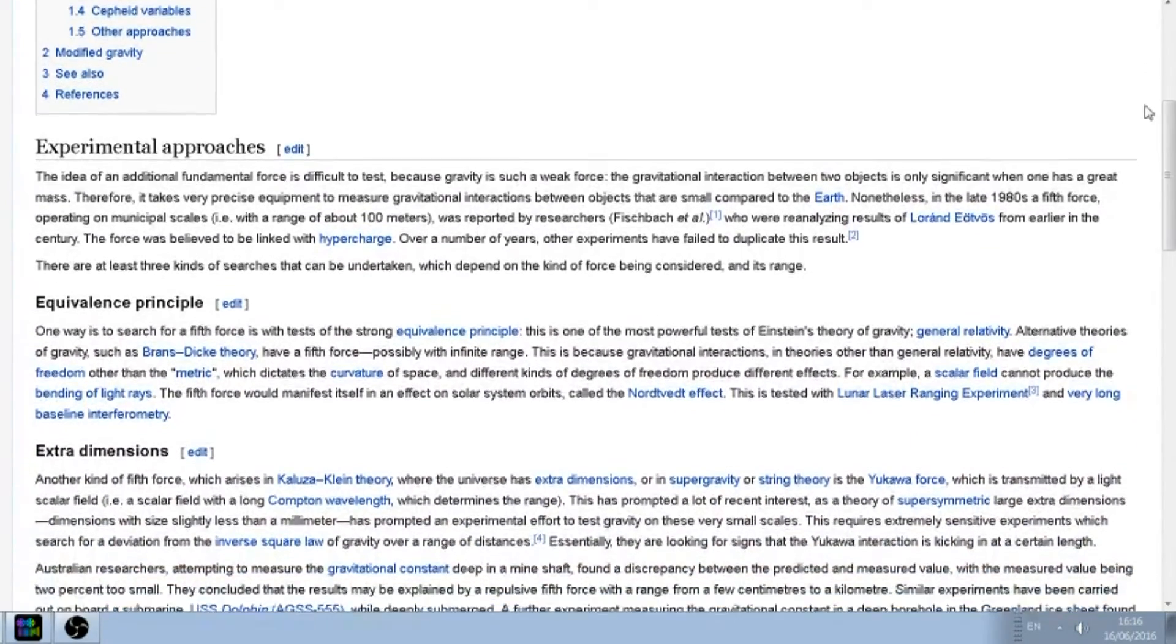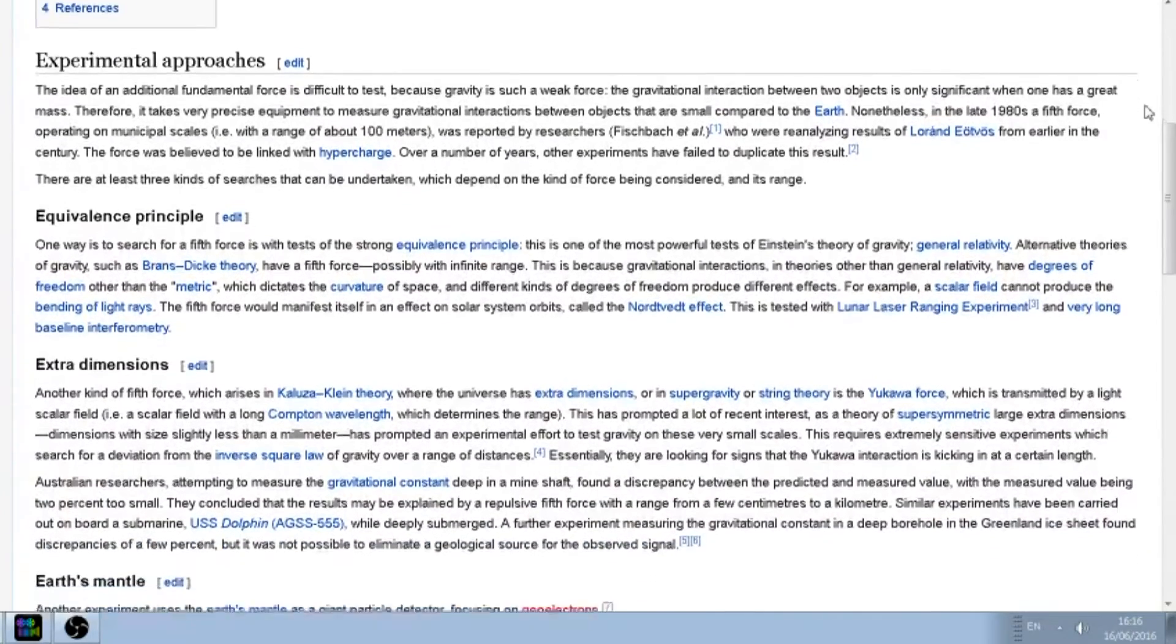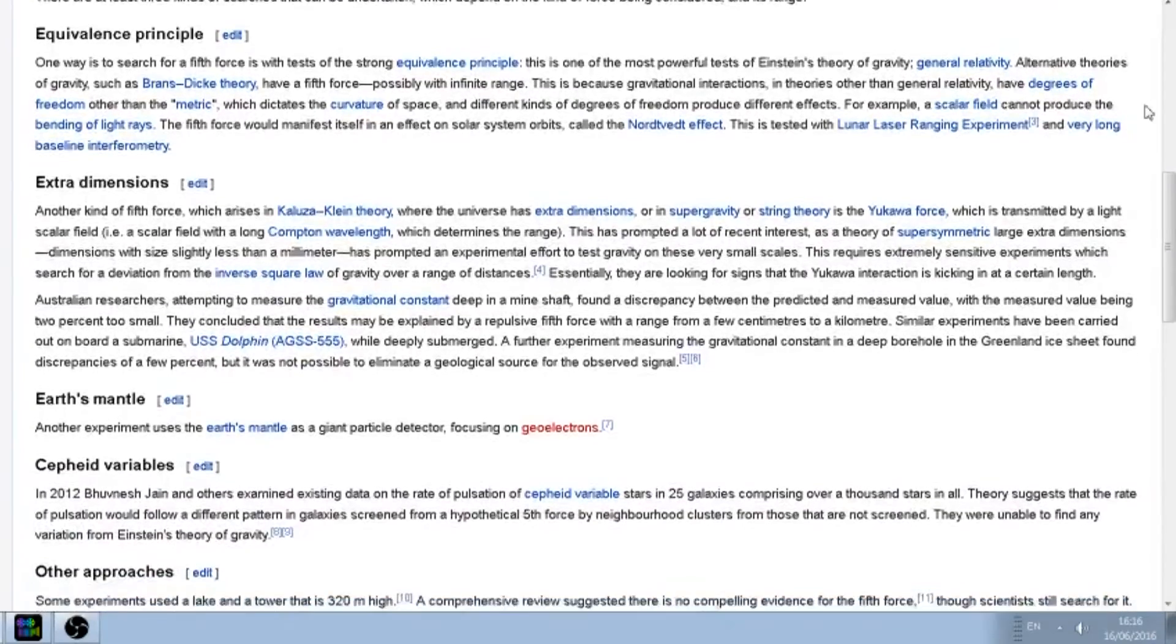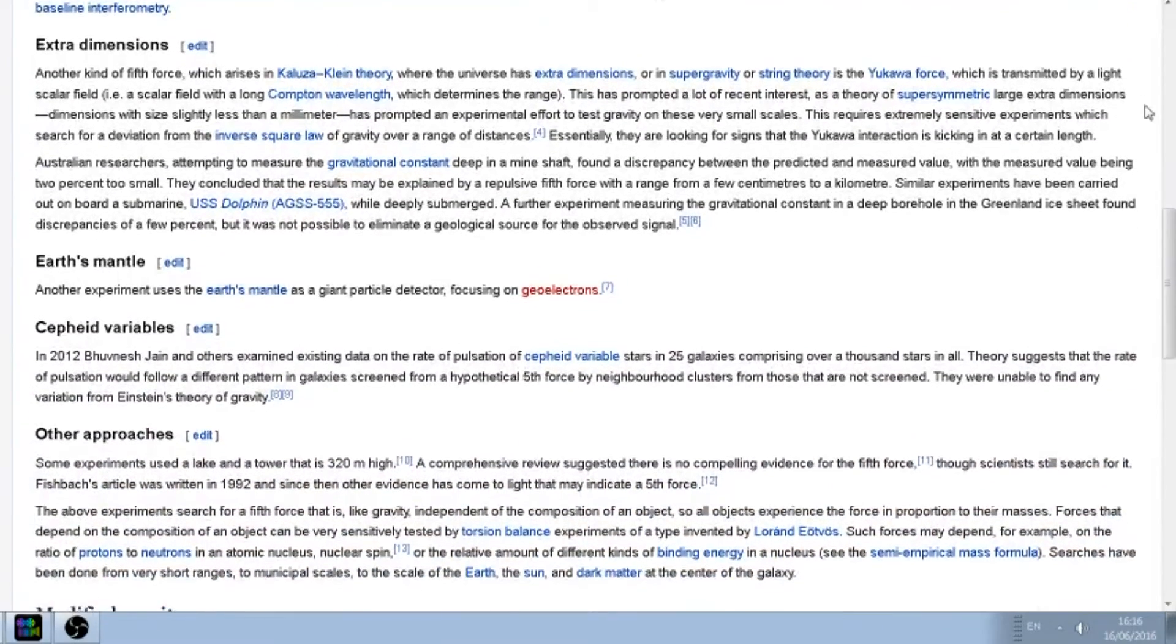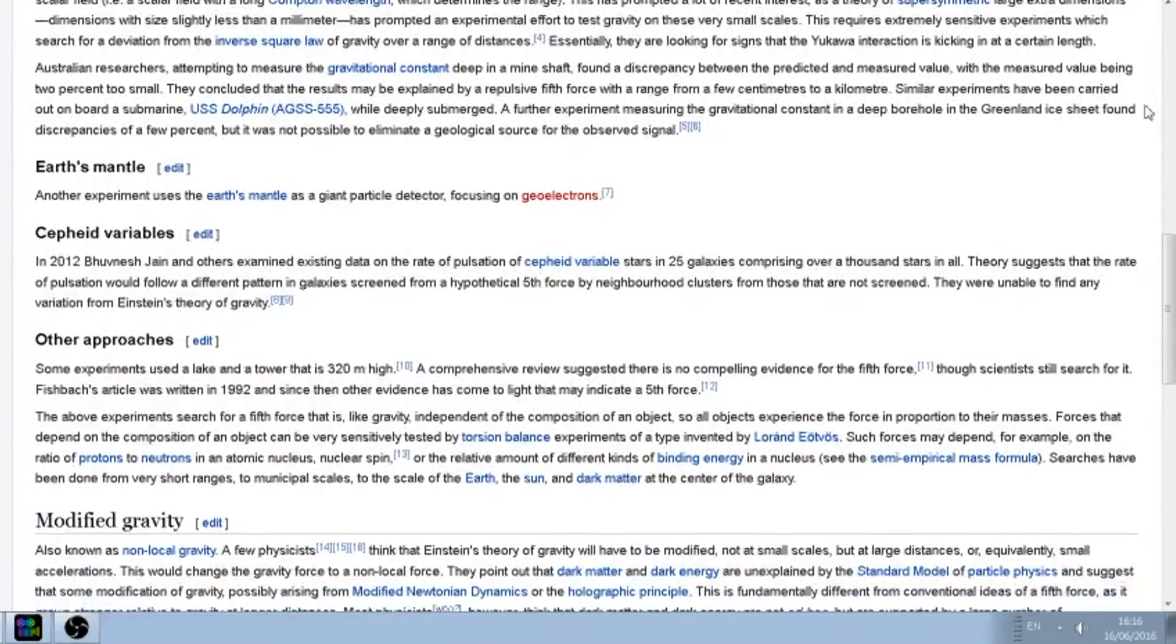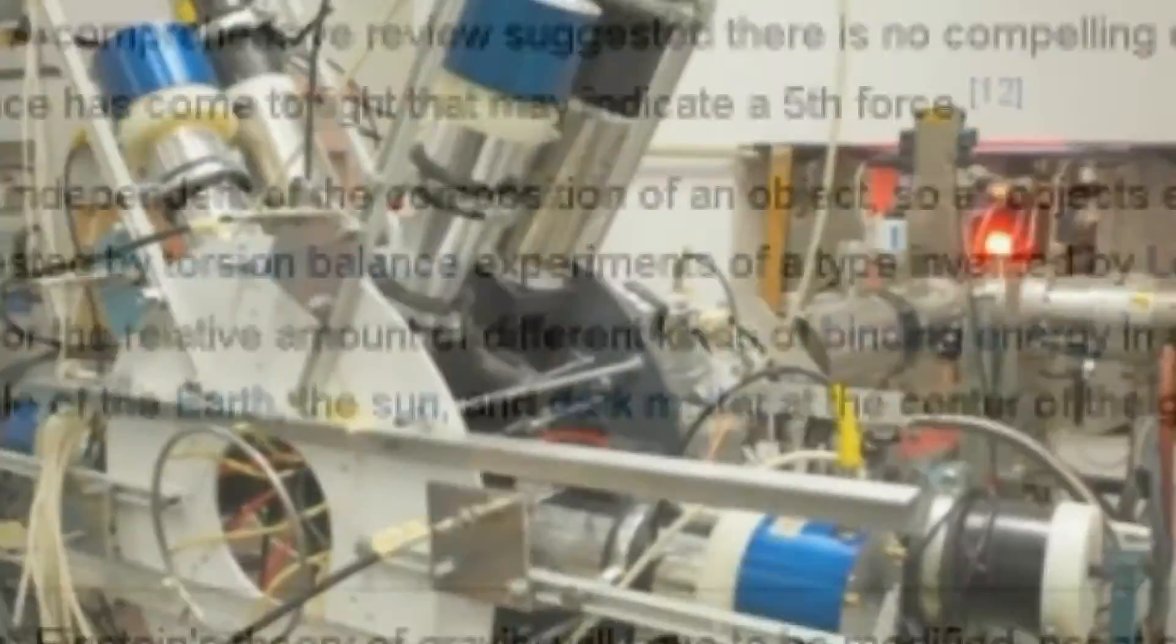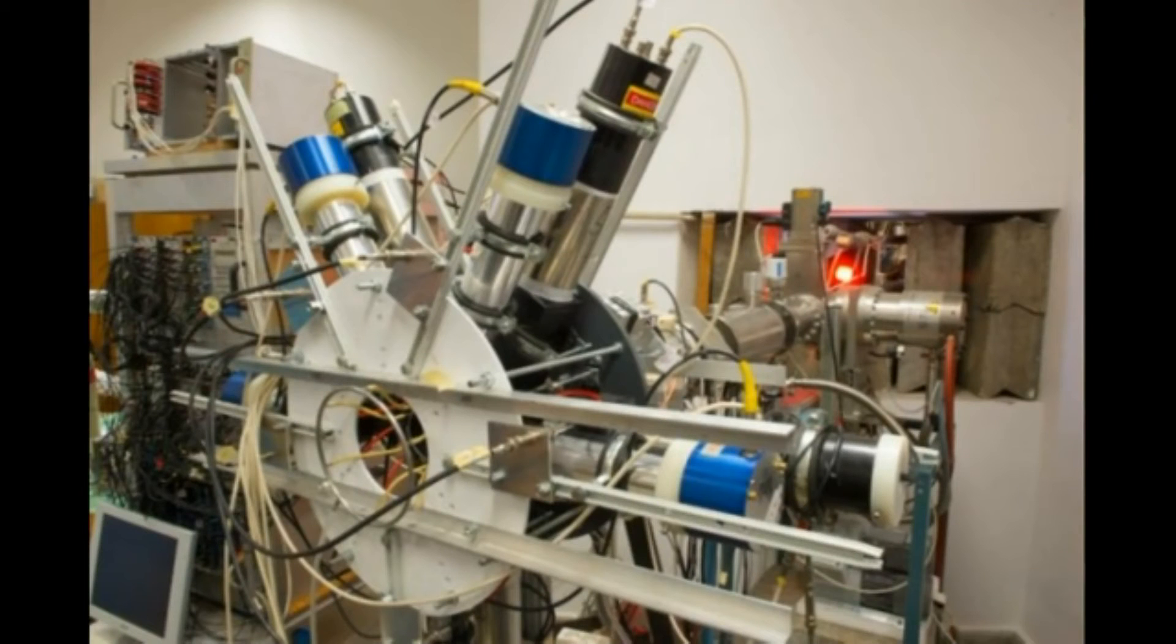Of course, this is particle physics, so there's bound to be skeptics. The Thomas Jefferson National Accelerator Facility in Virginia is conducting a dark light experiment to search for dark photons with masses of 10 to 100 megaelectronvolts. It's the perfect place to attempt to recreate Krasznerhekei's work on 17 megaelectronvolts.